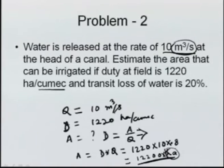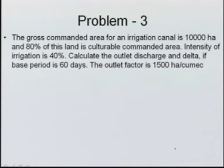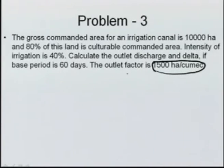Problem 3: the gross commanded area for an irrigation canal is 10000 hectare and 80 percent of this land is culturable commanded area. Intensity of irrigation is 40 percent. Calculate the outlet discharge and delta if base period is 60 days. The outlet factor is 1500 hectare per cumec, which is essentially the duty.